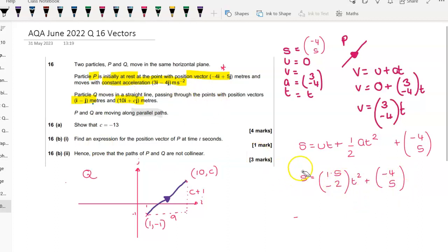Instead of calling it s, should we call it r for position vector? So that means it's this far along from minus 4, 5 after t seconds.